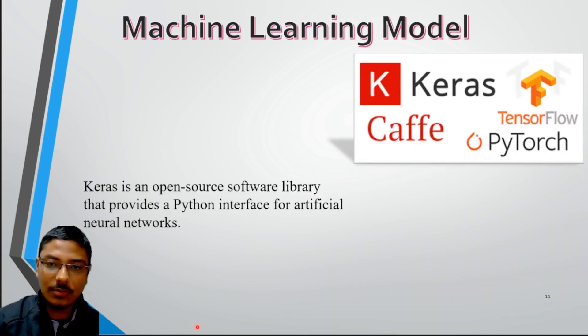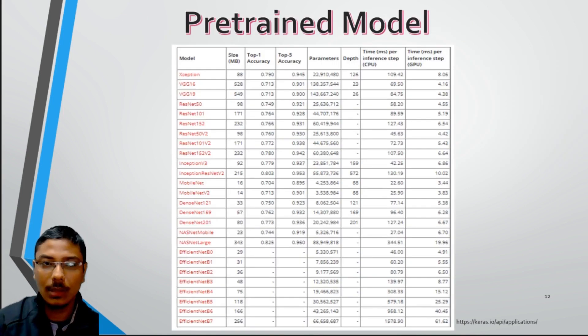For the machine learning model, we are using here Keras library. Keras is an open source software library that provides a Python interface for artificial intelligence networks. These are the pre-trained models from Keras library. Here the sizes are mentioned and the accuracy also mentioned. These are the accuracy with the ImageNet dataset.